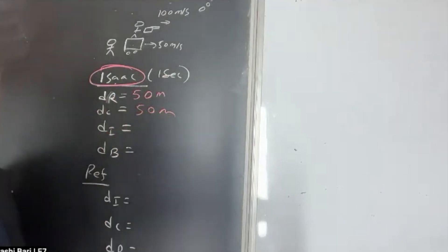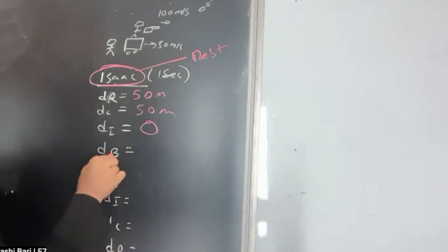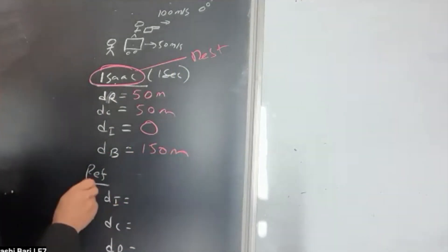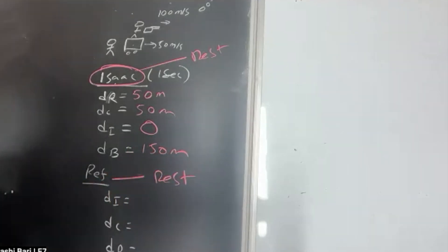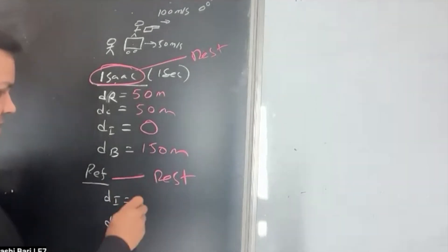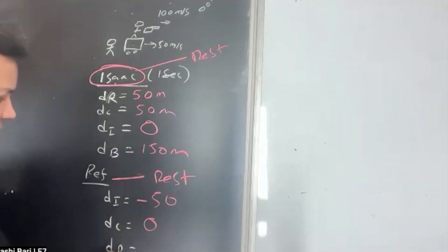Displacement of Isaac? Zero. Isaac is not moving? Yeah, not in his reference frame. Displacement of bullet? 150. Ref reference frame — displacement of Isaac? Minus 50. Displacement of car? Zero. Displacement of ref? Zero. Displacement of bullet? 100.